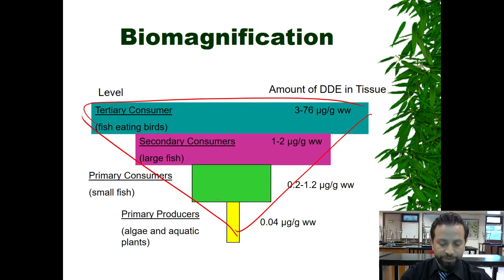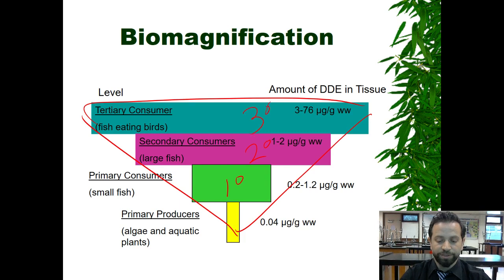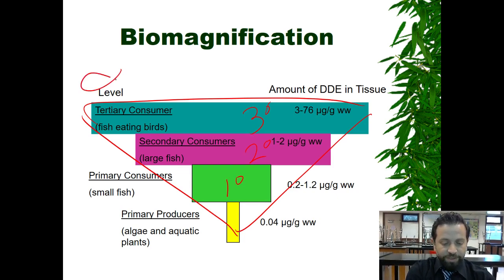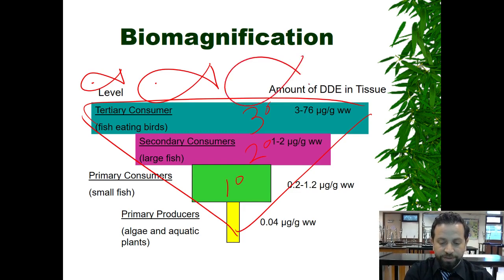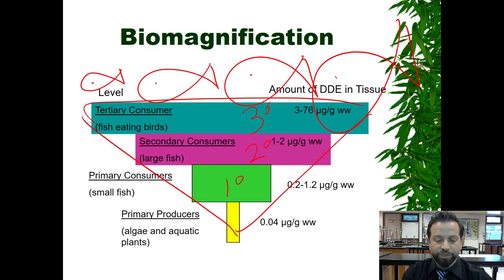We have our producers, or autotrophs, going up to the primary consumers, secondary, and tertiary consumers. Each time we're moving up trophic levels, the amount of toxin is magnifying. Think of it like a small fish, a bigger fish, a bigger fish, and then a ginormous fish — where each one eats the one below it.